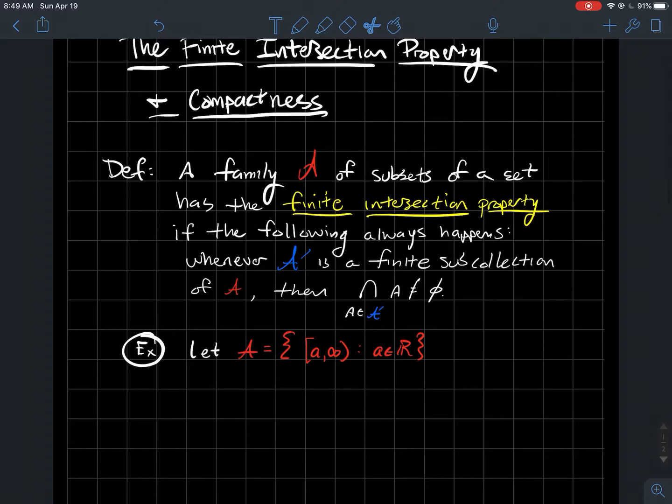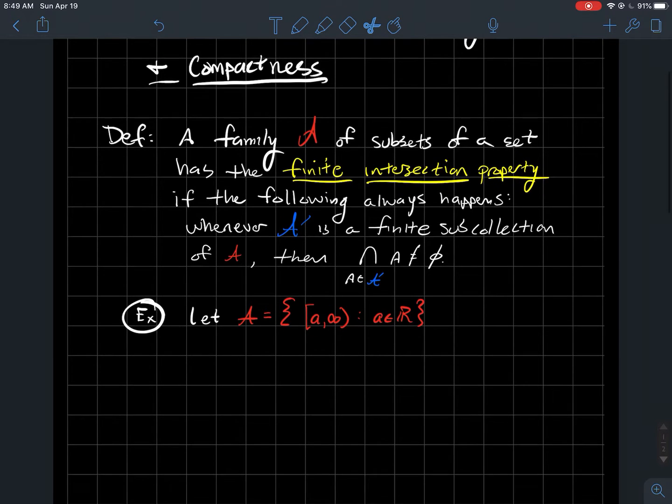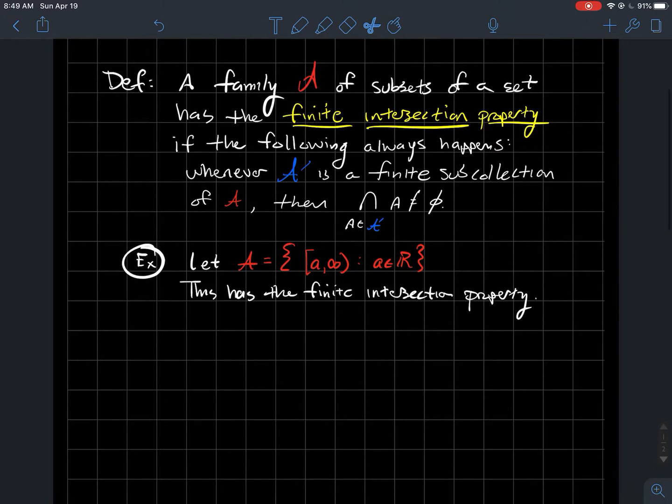Let's look at an example. Let's say my fancy A is the set of all intervals [a, ∞) where I'm including the left endpoint and a is just a real number. This collection has the finite intersection property. Let's talk about why.